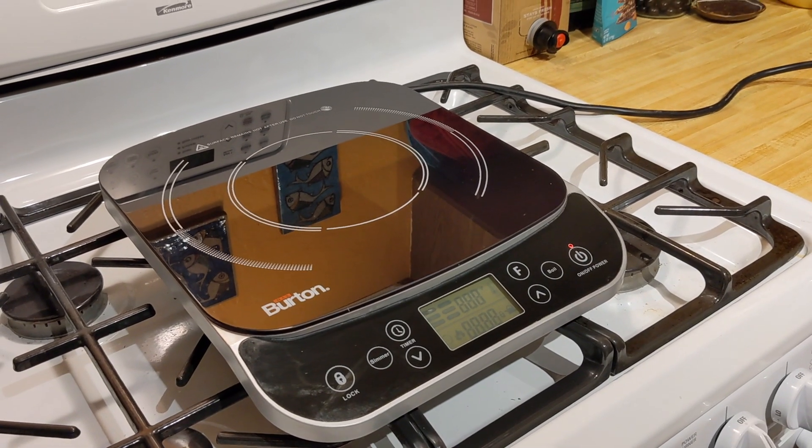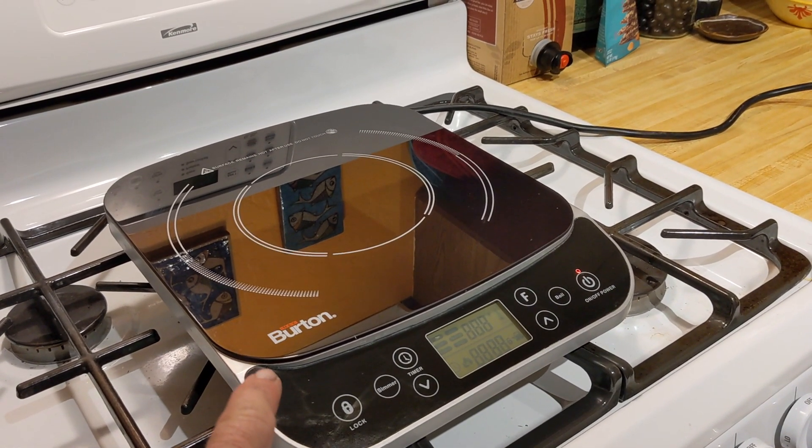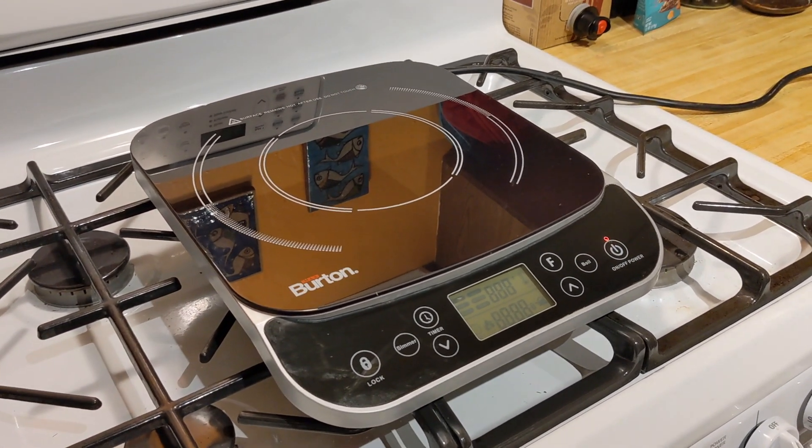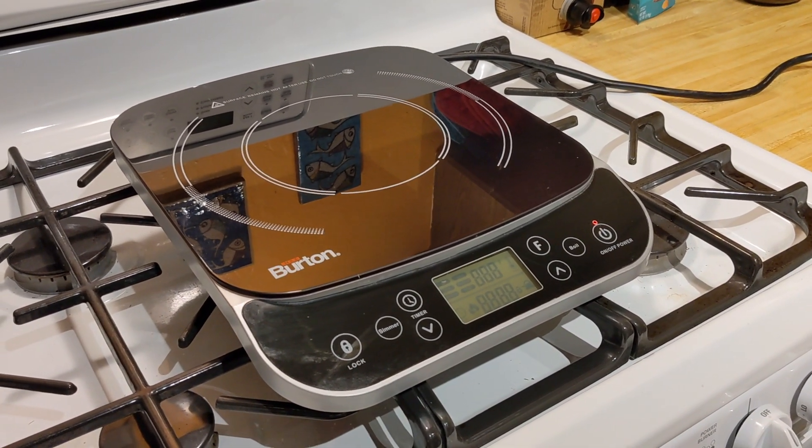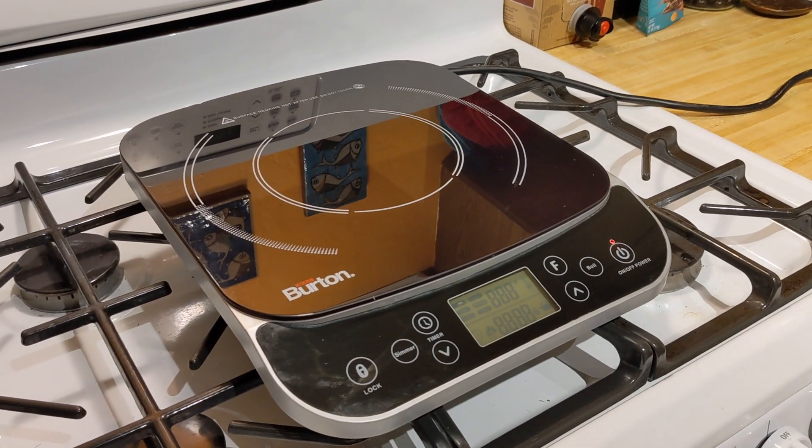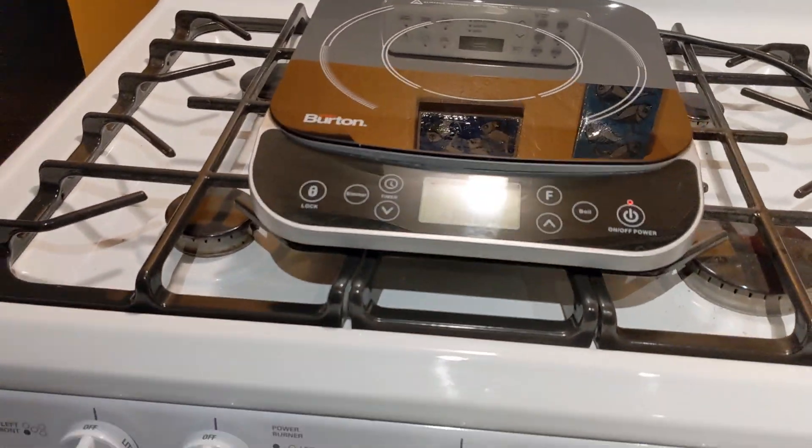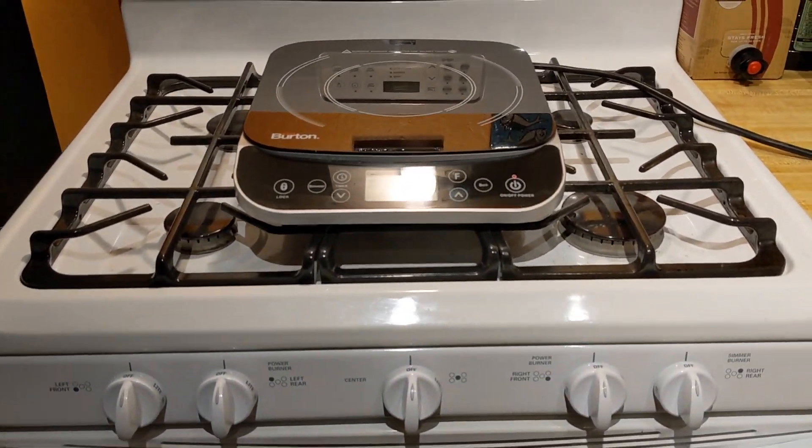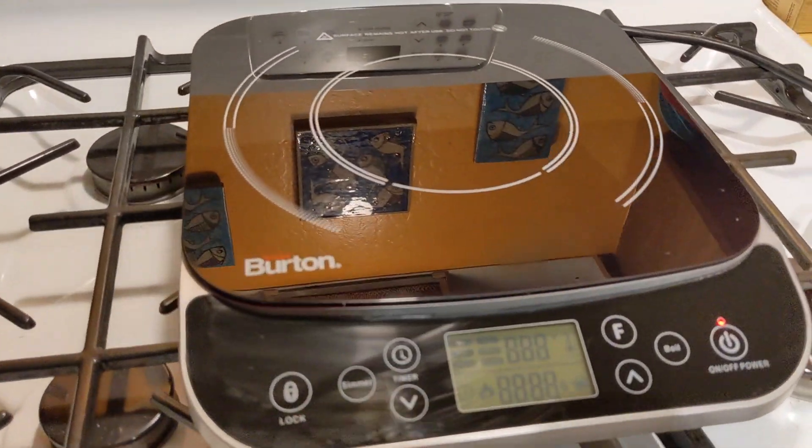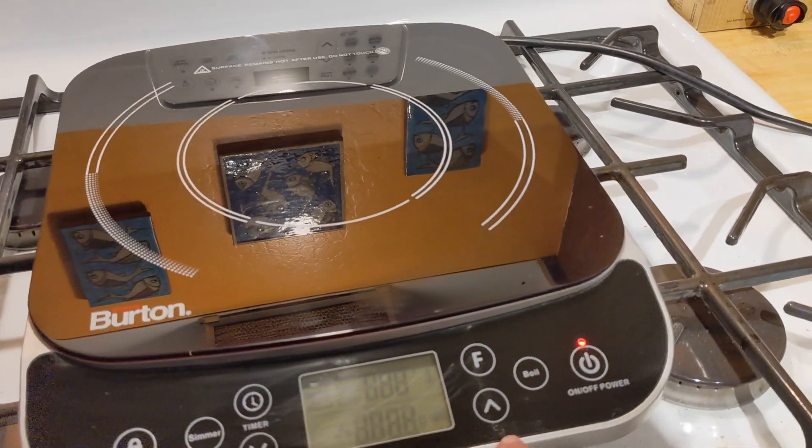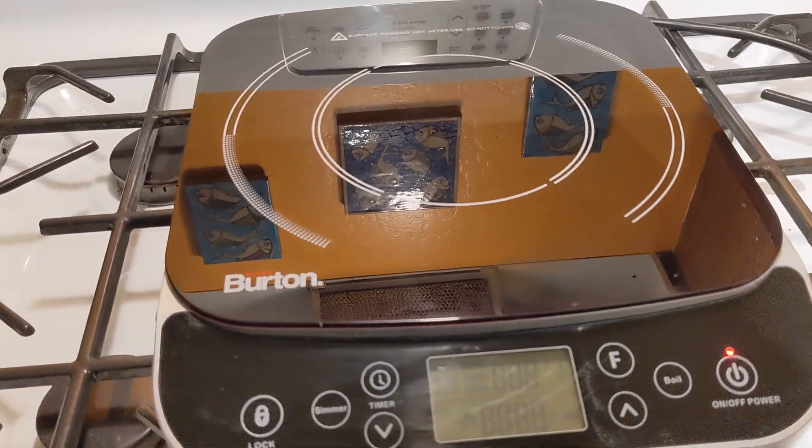I wanted to share this Burton induction cooktop. It's sitting on top of the stove. We lived inside our MCI for about 11 months and used this as our primary cooktop. There was a propane little range in there but I really love this thing. It'll get super hot - you can sear a steak with it or you can dial it down and just pick a temperature and have it simmer at 110 if you want.